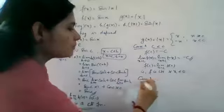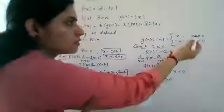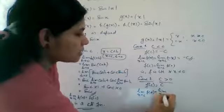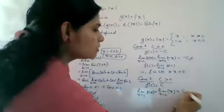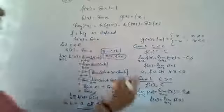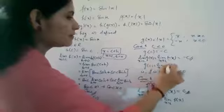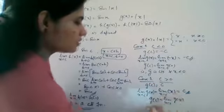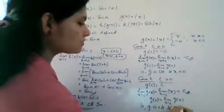Case 2: when c is greater than 0, f of c equals c. And limit x tends to c of f of x — replacing with x since it is greater than 0 — gives c. Therefore f of c equals limit x tends to c of f of x, that is g is continuous for all x greater than 0.